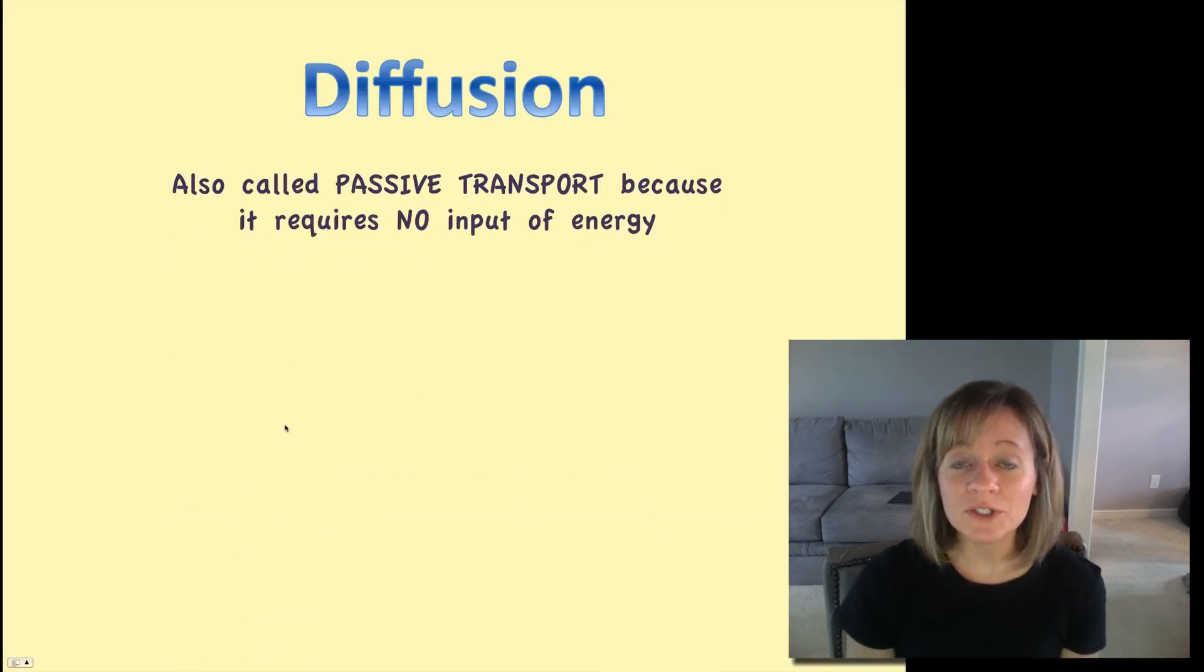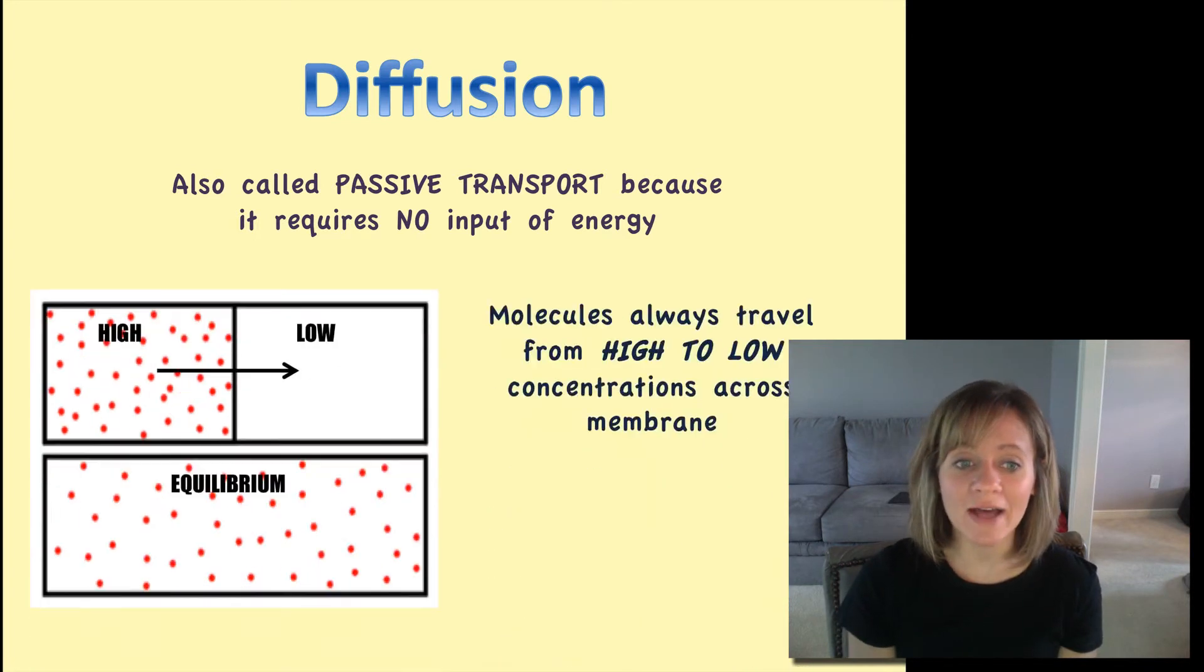So first we'll look at that first example of oxygen and carbon dioxide. They pass through the membrane through a process called diffusion. It's also called passive transport because it requires no input of energy. So let's see how that works. Here we've got maybe oxygen particles in a highly concentrated area. They're going to want to move from high to low. That's called moving down their concentration gradient. And it happens spontaneously without energy at all, going from high to low. And then at the end you have equilibrium.